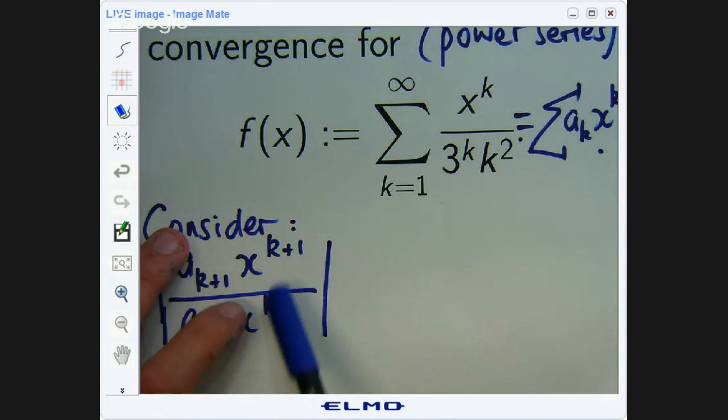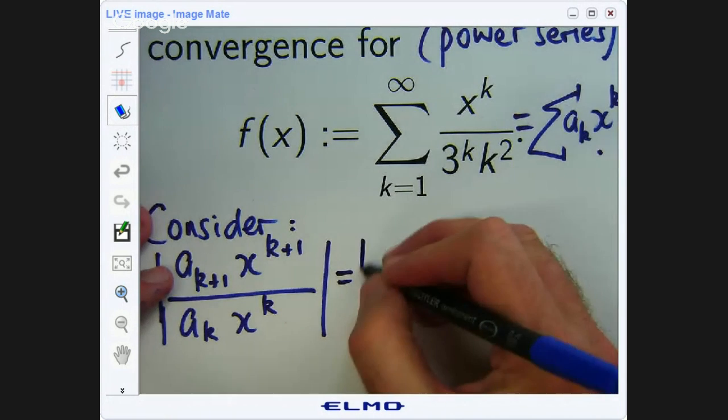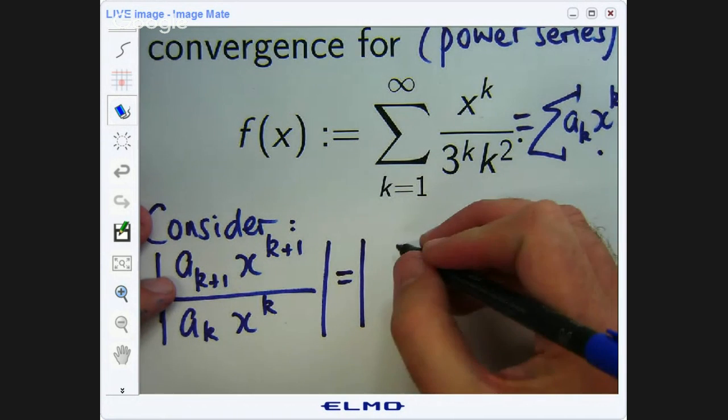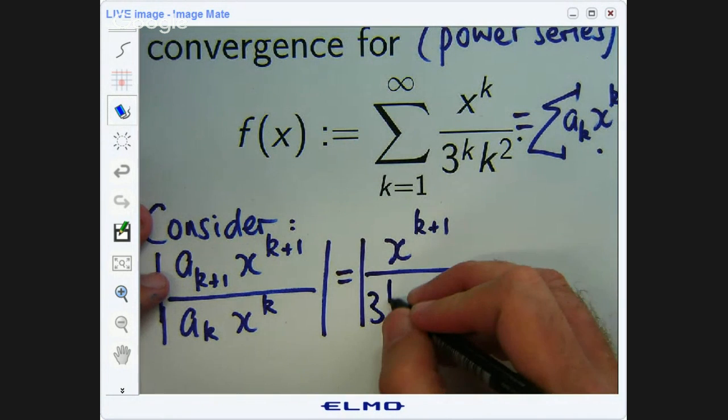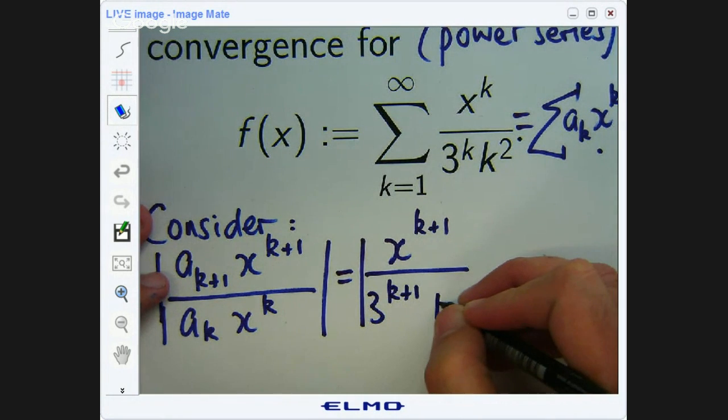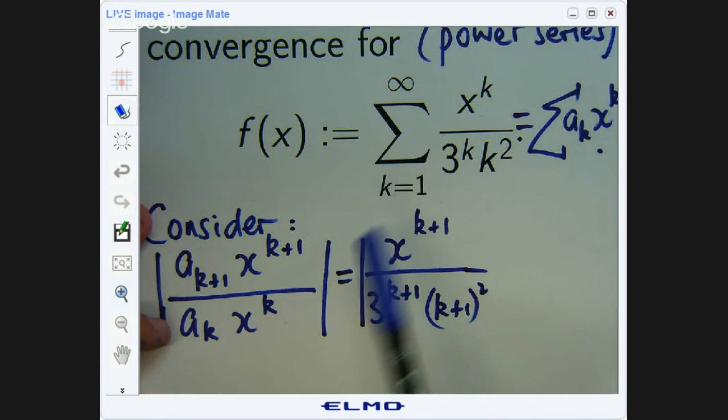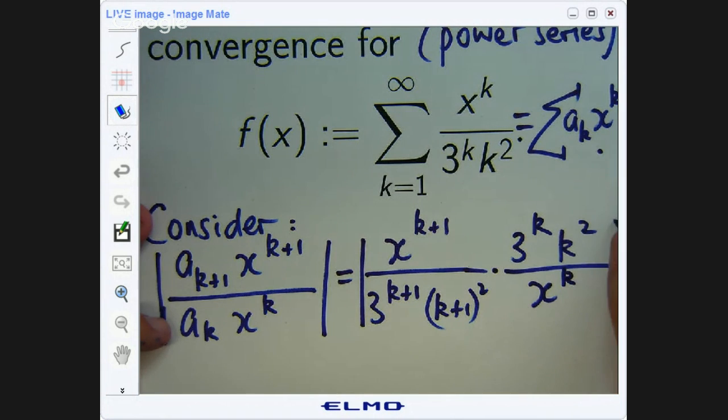Of course, these things cancel out straight away and you just get x here. But let's just write it in for completeness. So we'll replace k with k plus 1 throughout. So I get x to the k plus 1. And on the bottom, I'll get 3 to the k plus 1 times k plus 1 all squared. And instead of dividing again, I'll multiply through by the reciprocal. So let's put this, flip it, and we'll multiply through.